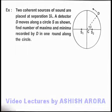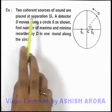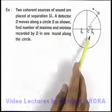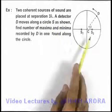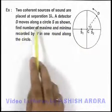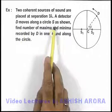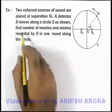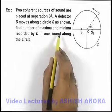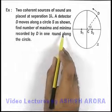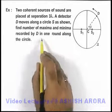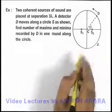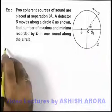In this example we are given 2 coherent sources of sound which are placed at a separation of 3 lambda, and a detector D moves along a circle S, as shown. We are required to find the number of maxima and minima recorded by this detector in 1 round along the circle.